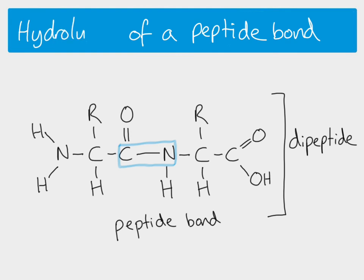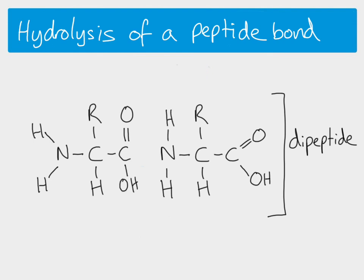The opposite of the formation of a peptide bond is the hydrolysis of the peptide bond. That's where we have two amino acids joined together by a peptide bond and we want to break it apart. We add water — so it's a hydrolysis reaction: 'lysis' meaning splitting, 'hydro' meaning with water — so we add in two H's and an O. The OH goes on one side, the H goes on the other, and now we have our two amino acids back where we started.